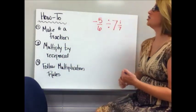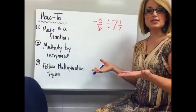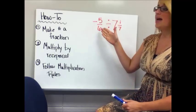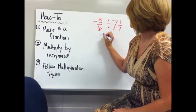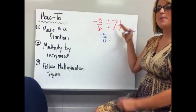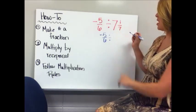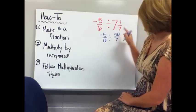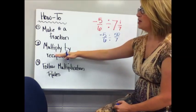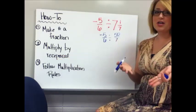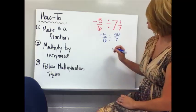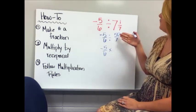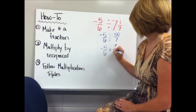Here's the how-to for dividing fractions. First, make all numbers into fractions — same first step as multiplying. For example, negative 5 over 6 divided by 7 and 1 over 7: negative 5 over 6 is already a fraction. Convert 7 and 1 over 7 to an improper fraction: 7 times 7 is 49, plus 1 is 50, so it becomes 50 over 7. Step 2: multiply by the reciprocal, so instead of dividing by 50 over 7, I multiply by 7 over 50.